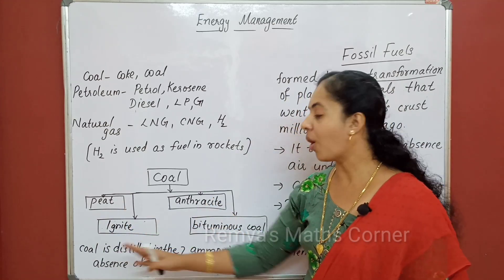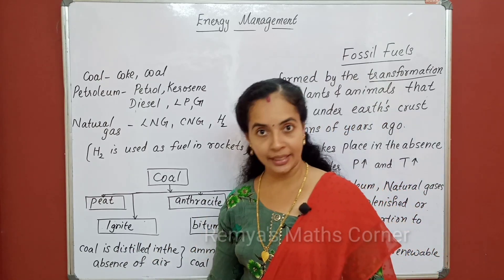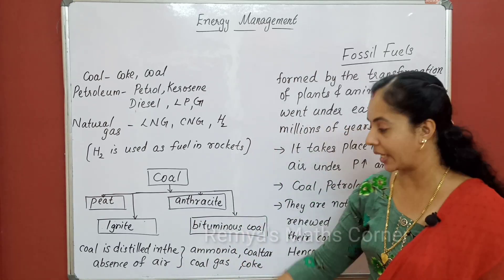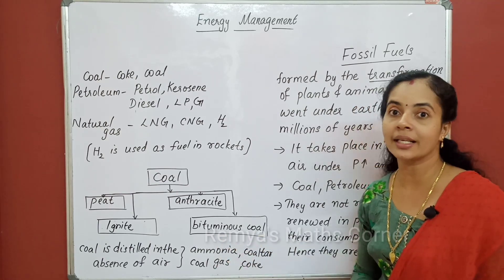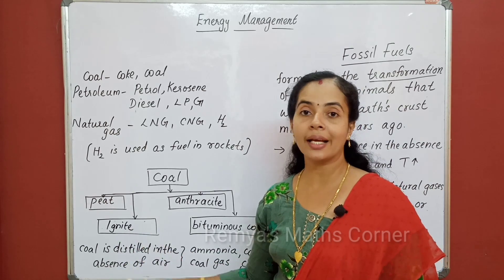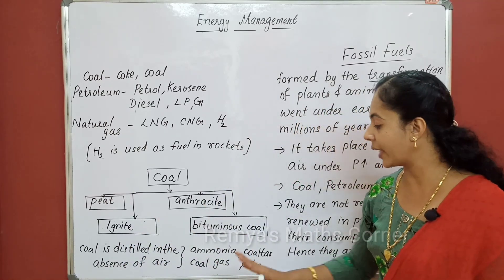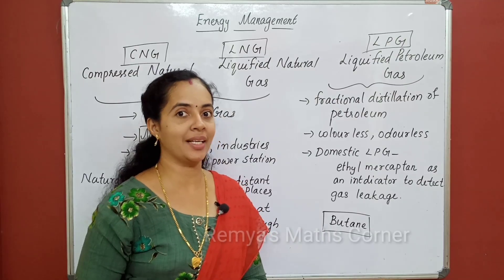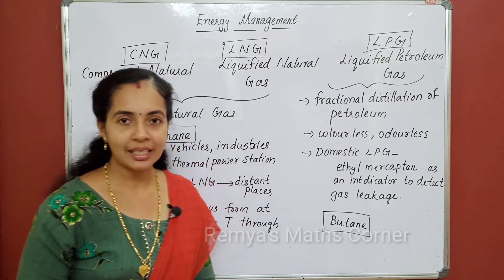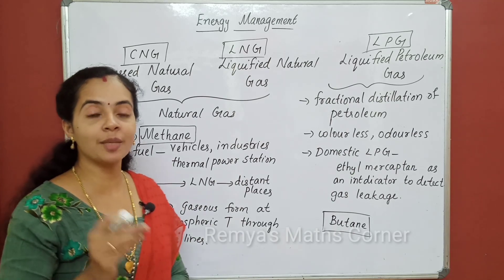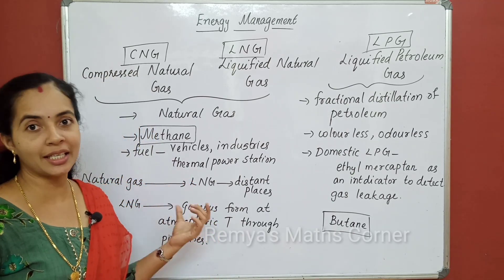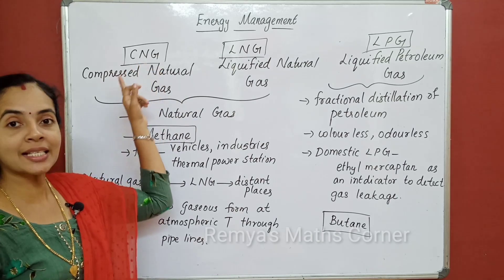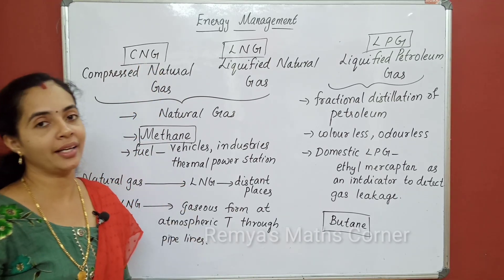Coal is distilled in the absence of air to produce coke, coal gas, coal tar, and ammonia. Natural gas has two forms: CNG and LNG. Petroleum gas gives us LPG. CNG means compressed natural gas. LNG means liquefied natural gas.